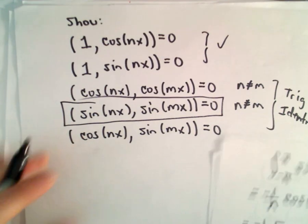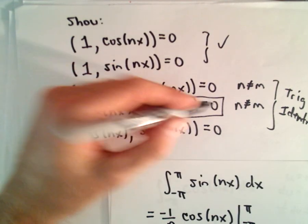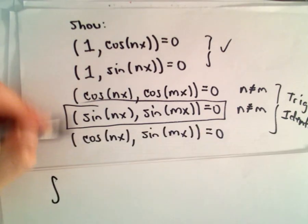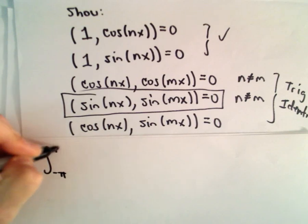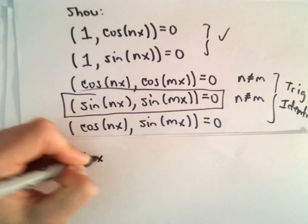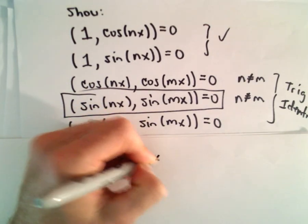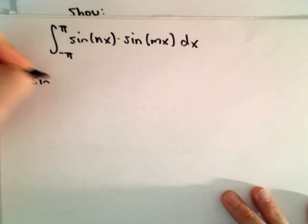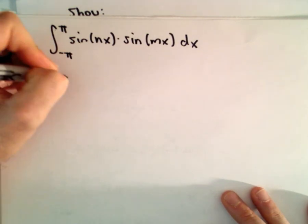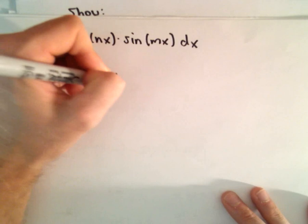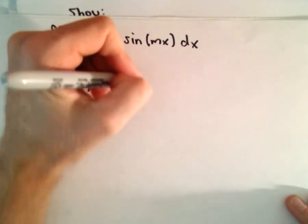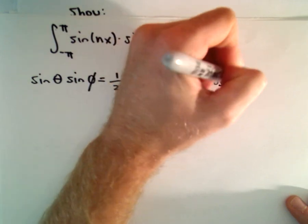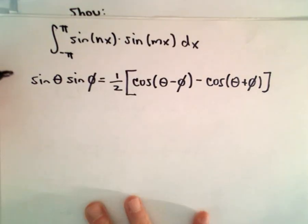I'm going to show that the inner product of sin(nx) and sin(mx) equals 0 — the other two remaining cases work the exact same way. We integrate from negative π to positive π: sin(nx) times sin(mx) dx. The trig identity I'll use is: sin(θ)·sin(φ) = (1/2)[cos(θ − φ) − cos(θ + φ)]. Applying this identity with θ = nx and φ = mx will allow us to integrate.